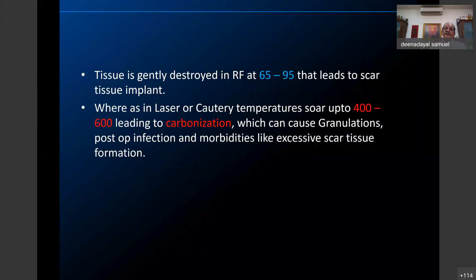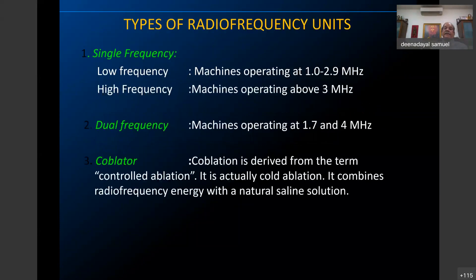Types of radio frequency units: single frequency, dual frequency. Co-ablation is also a radio frequency unit but requires a saline medium. Low frequency is 1 to 2.9 megahertz; high frequency is 3 to 4.5 megahertz. Some machines have dual frequency at 1.7 and 4 megahertz. There are different waveforms: fully filtered cut form, cut and coagulation combined, or coagulation only — with contact and spray modes.